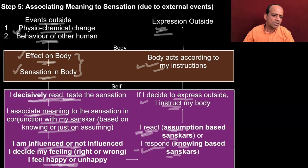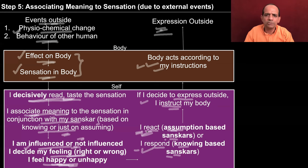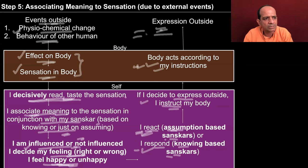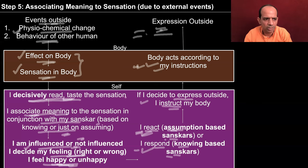So you will see that depending upon your sanskar, you are influenced or not influenced, and then you react or respond depending again on the assumption-based or knowing-based sanskar. You decide to express it outside and then the body acts accordingly and there is expression outside. So try to observe this. I took two examples — one of a behavior by some other person, and the other of a physiochemical change taking place outside the body which has an effect on the body. The mosquito was flying in the air, it sits on the body and bites you — this is something happening outside the body, and from the time the mosquito has bitten you it has an effect on the body.